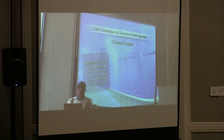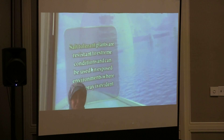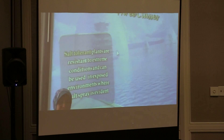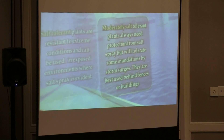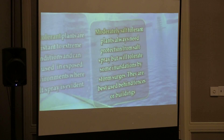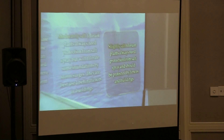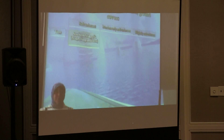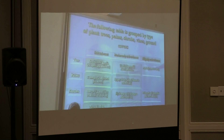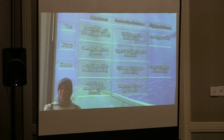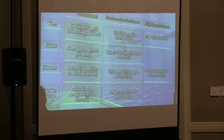We will talk about salt tolerance of selected plant species, which can be divided into three classes. First, salt tolerant plants, which are resistant to extreme conditions and can be used in exposed environments with salt spray. Next, moderately salt tolerant plants, which always need protection from salt spray but will tolerate some conditions from storm surge. The last class is slightly salt tolerant plants, which always need protection from salt spray and should be protected by fences. For example, southern magnolia is considered salt tolerant; Russian olive is moderately salt tolerant; and poplar can be considered slightly salt tolerant.